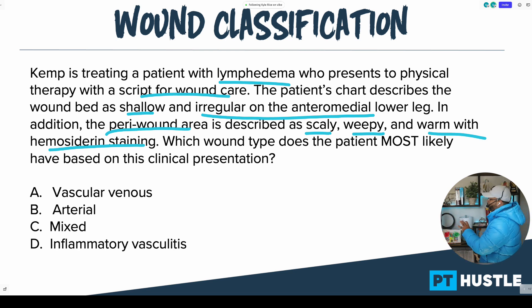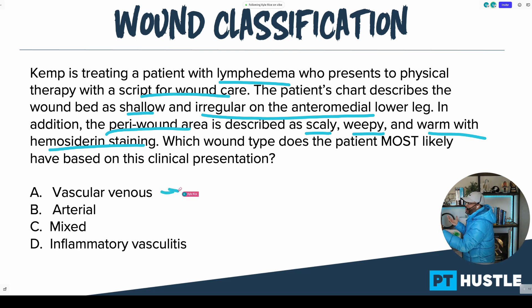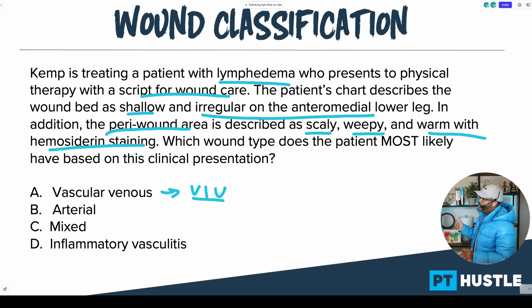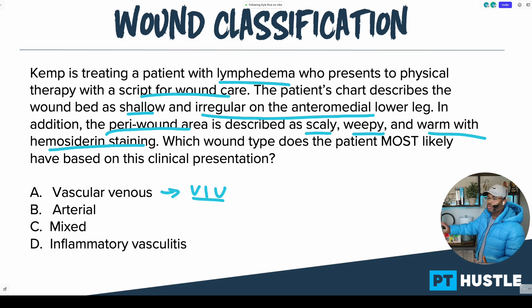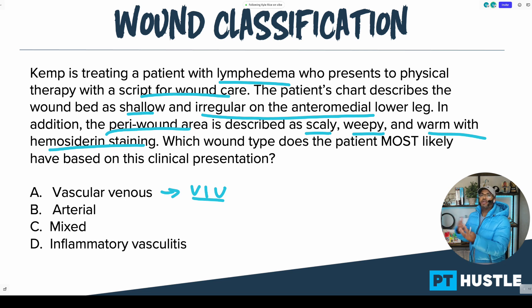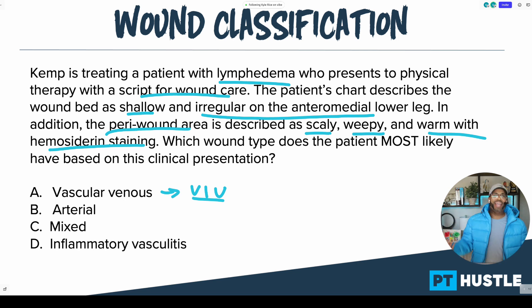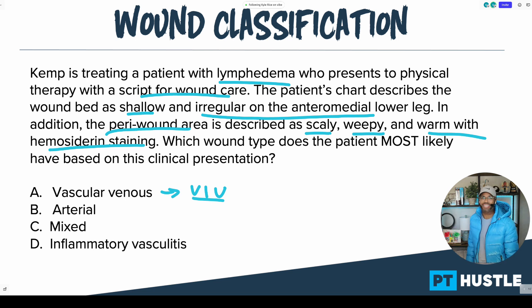I like Answer A because vascular venous in my mind is like a venous insufficiency ulcer — a VIU. That's when your venous system is not keeping up with the demand, not able to get blood back to the heart, so we start to have breakdown of the tissue and skin. Now, does this patient have a backup of fluid? Absolutely — we're talking about lymphedema. Are vascular venous wounds shallow and irregular? Yes. Can they be found on the anterior medial lower leg? Absolutely. Are they scaly, weepy, warm with hemosiderin staining? Yes — all of those are 100% on point for vascular venous.